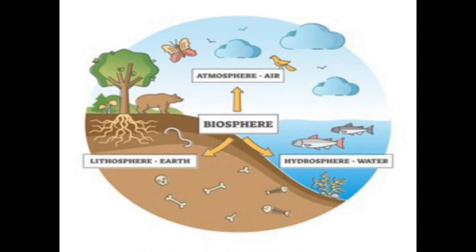On the surface of the Earth, we find land in some places and water in other places. On the Earth's surface, some places show land, some show water, and some show air. There are living things on land, in water, and in the air.